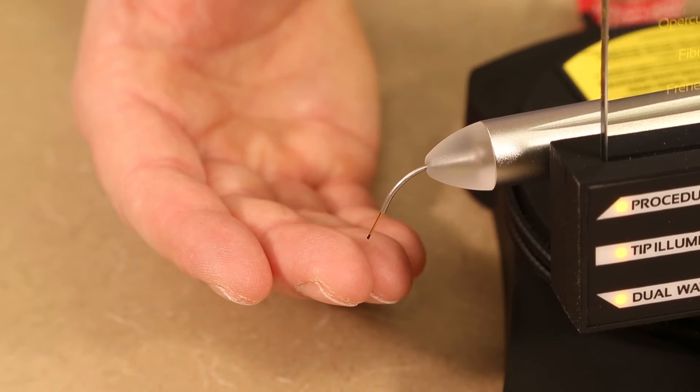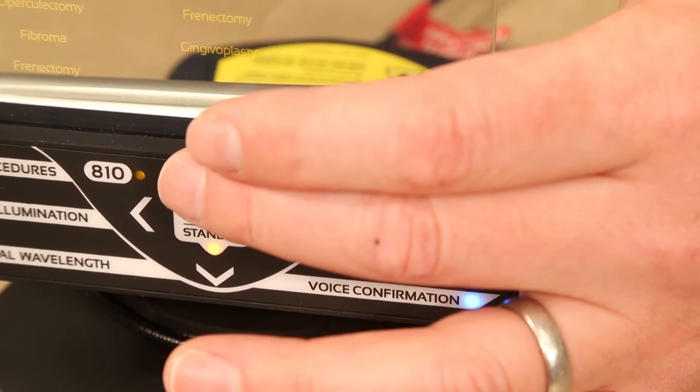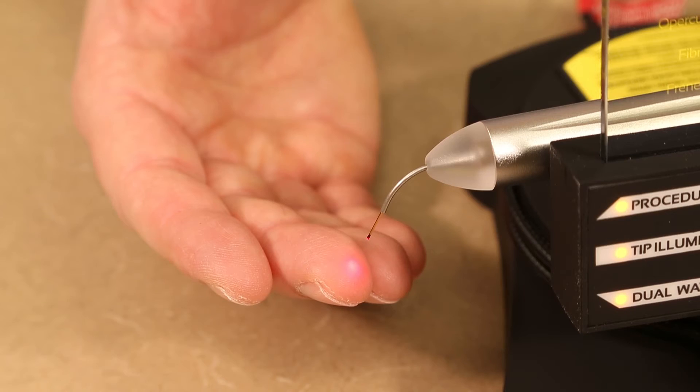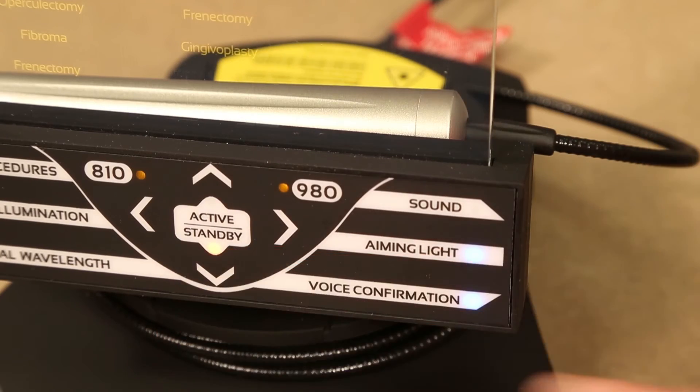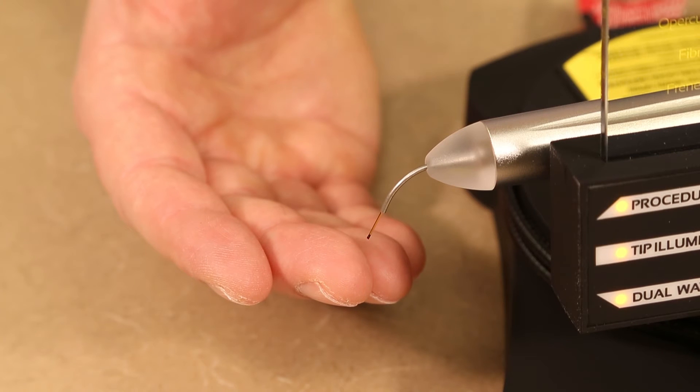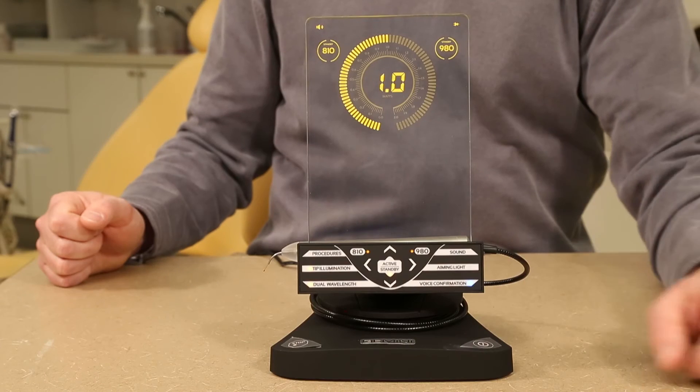To adjust the aiming light, press the aiming light button and use the up and down arrows to select the desired intensity of the aiming light. Please note that the aiming light is not the laser. It is an additional LED light that helps the operator direct the tip to the desired location.